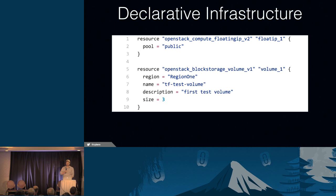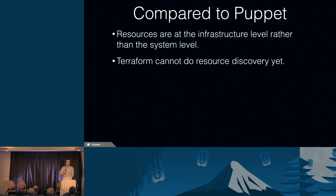In this case, it's creating two cloud resources: a floating IP and a block storage volume. The floating IP comes from the public pool. The block storage volume has a description of 'first test volume' and a size of three gigabytes. Compared to Puppet, Terraform resources are at the infrastructure level rather than the system level. With Puppet you're working with packages, users, and files. With Terraform you're working with whole systems such as instances, block storage volumes, and floating IPs.